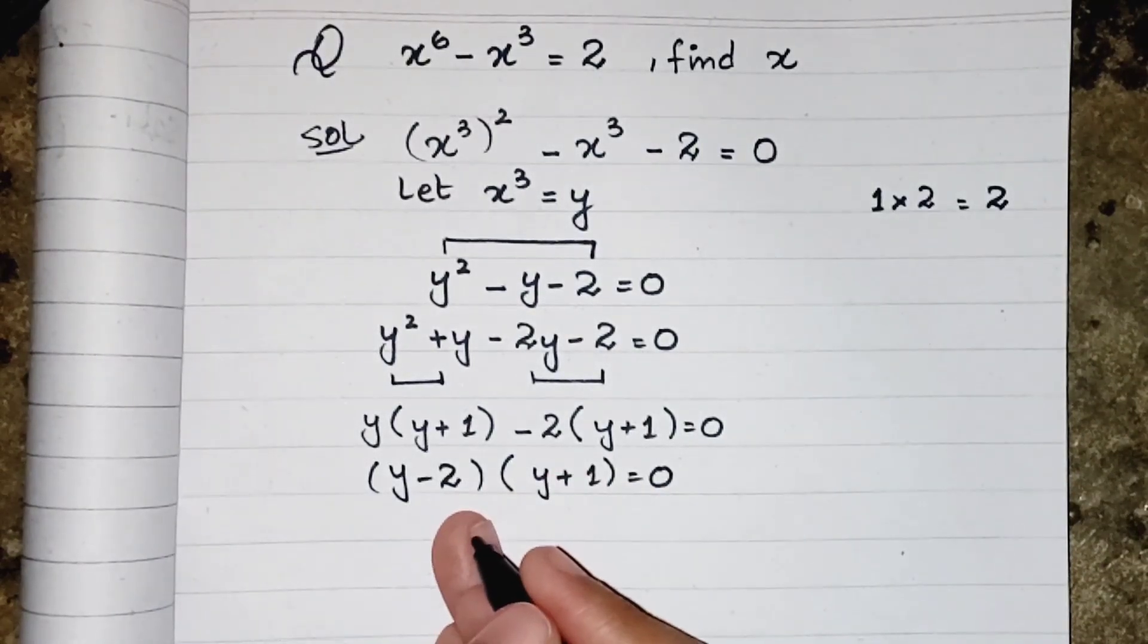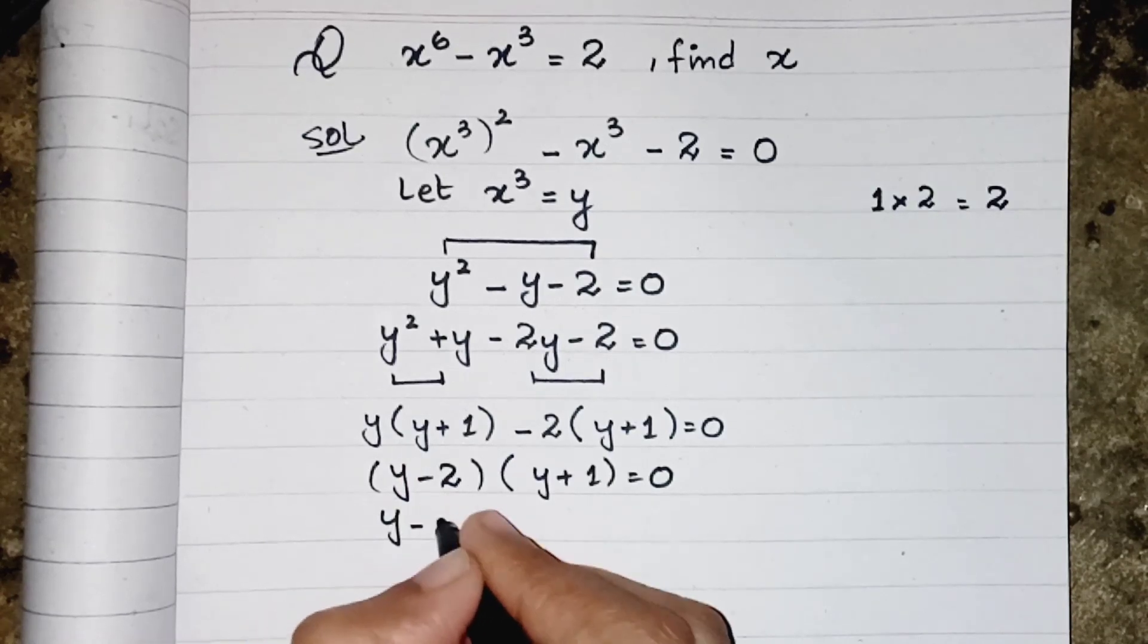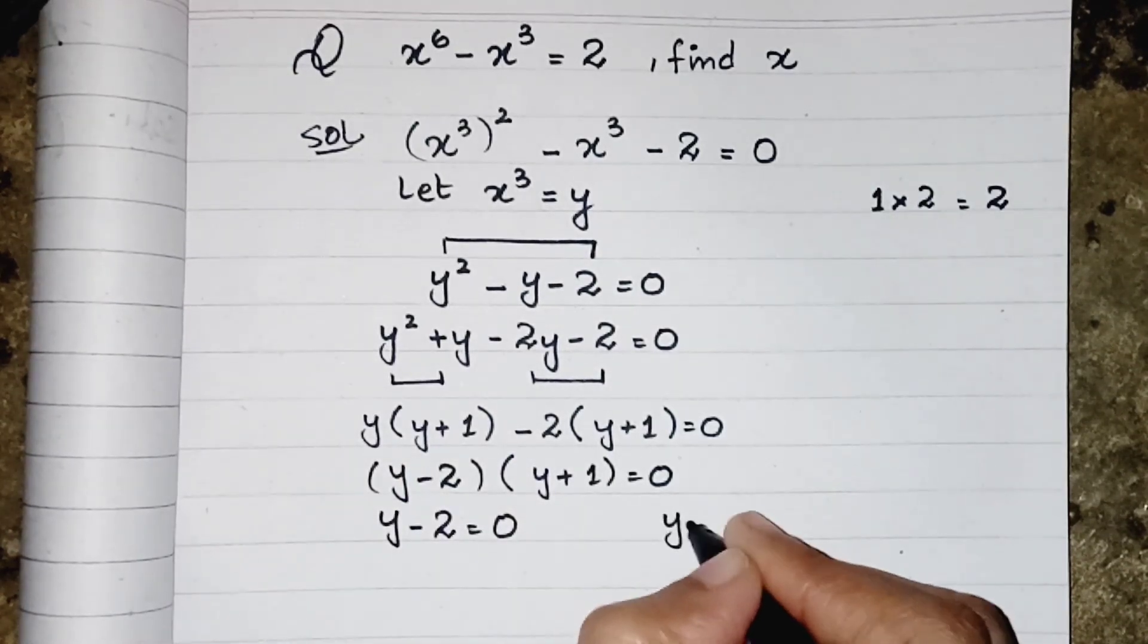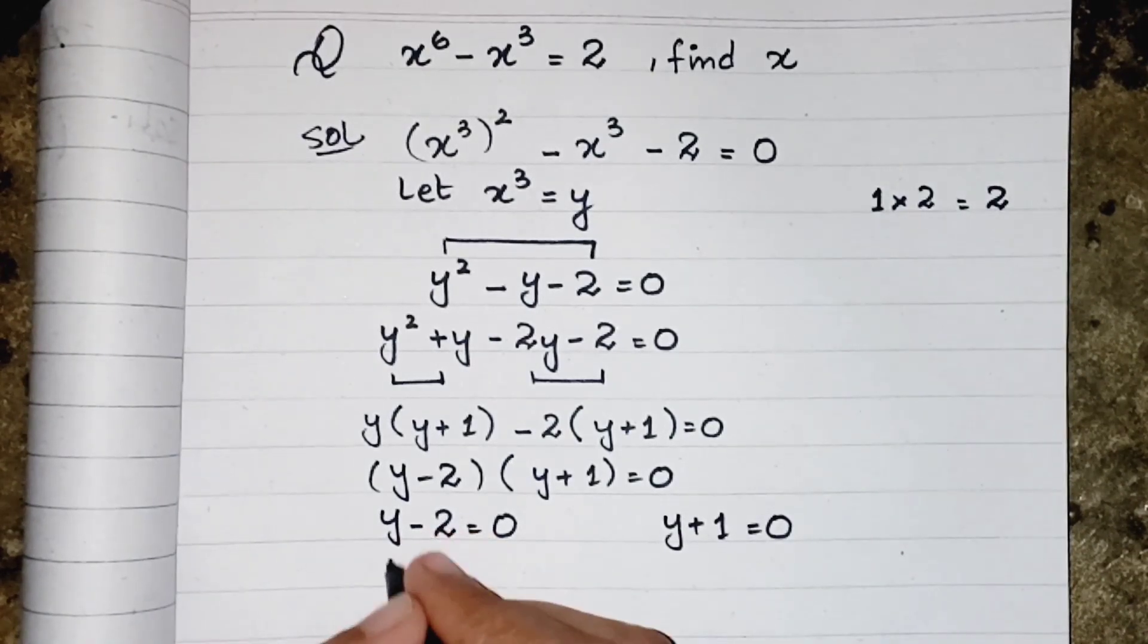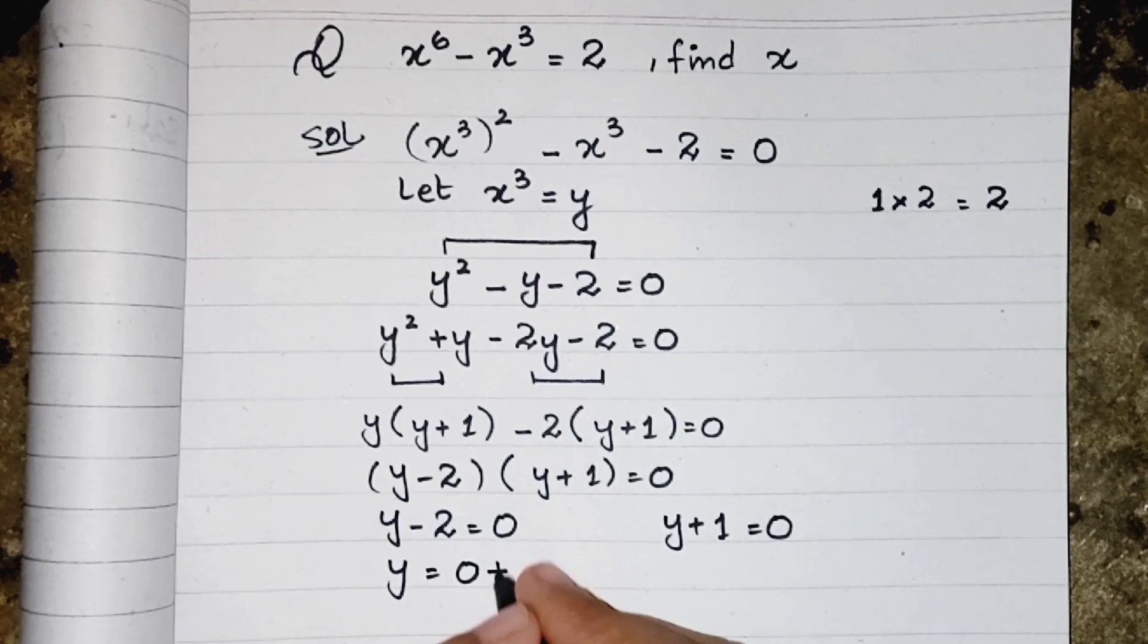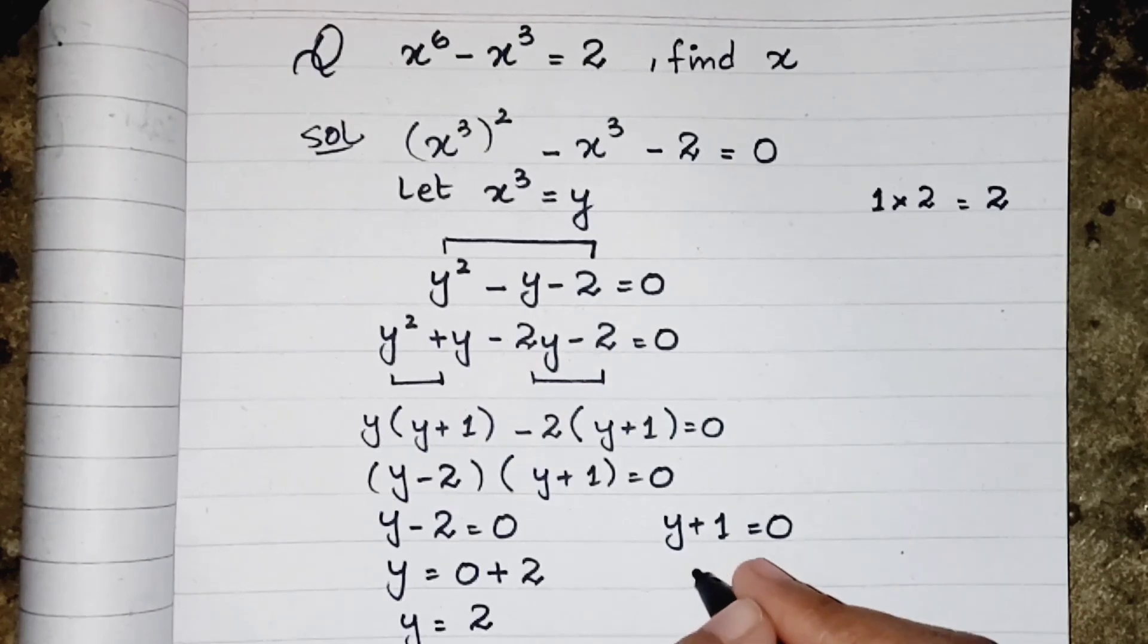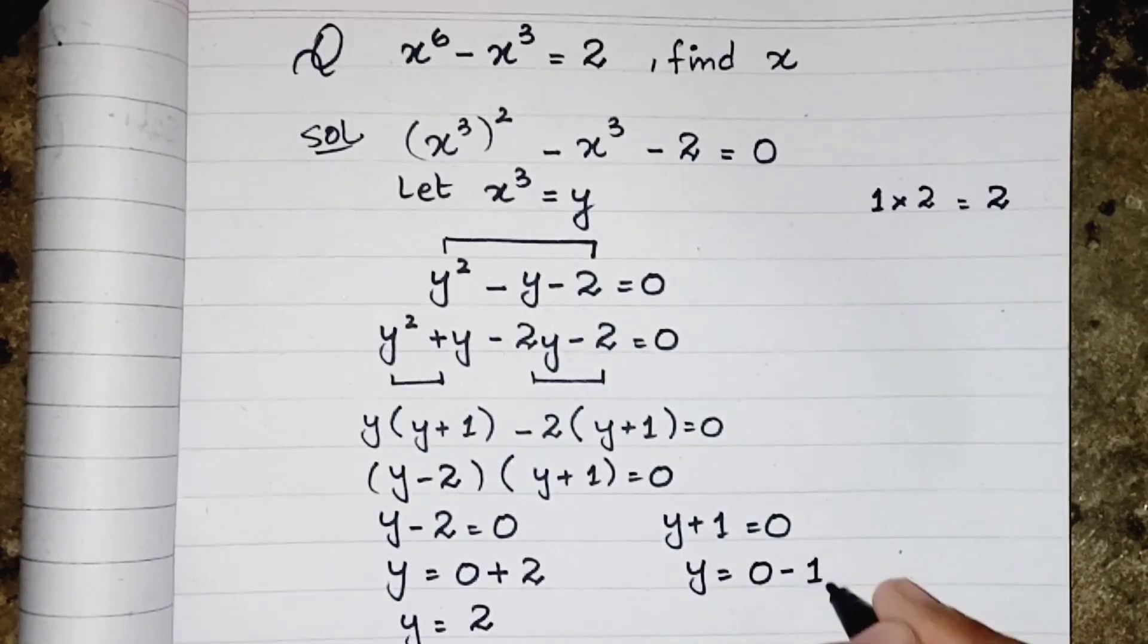Now both brackets are multiplied to each other and equate to 0. So we just have to equate them separately by 0. y minus 2 equals to 0, y equals to 2. y plus 1 equals to 0, y equals to minus 1.